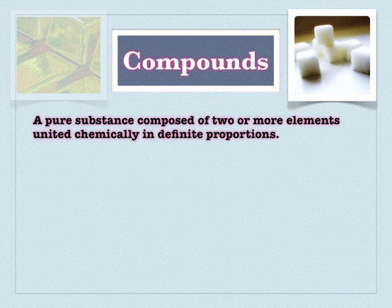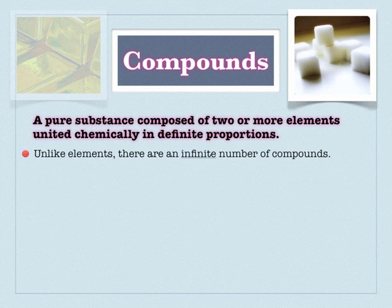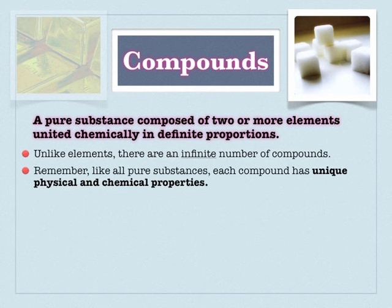Compounds, on the other hand, are pure substances composed of two or more elements chemically combined. When you look at a chemical formula, it's easy to tell you have a compound because there will be more than one element in it. Unlike elements, which are limited to about 120, you have an infinite number of compounds because we can combine elements in endless ways — although they are still pure substances with specific chemical and physical properties.